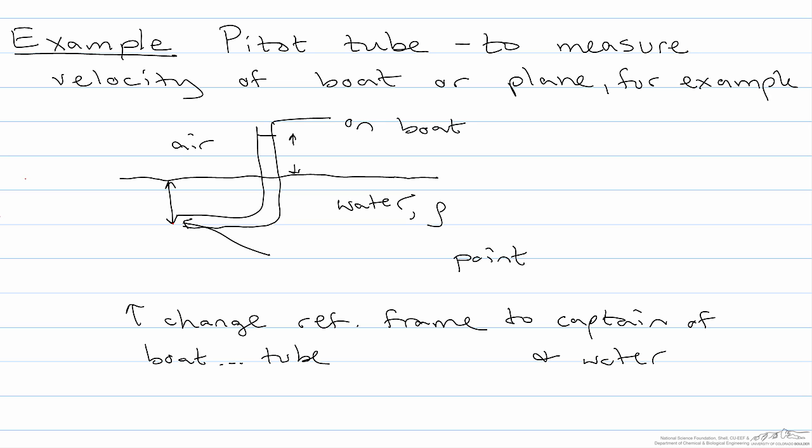This example shows how the Bernoulli equation is applied in a pitot tube, which is being used to measure the velocity of a boat. It can also be used to measure the velocity of a plane, but in this example it's for a boat.